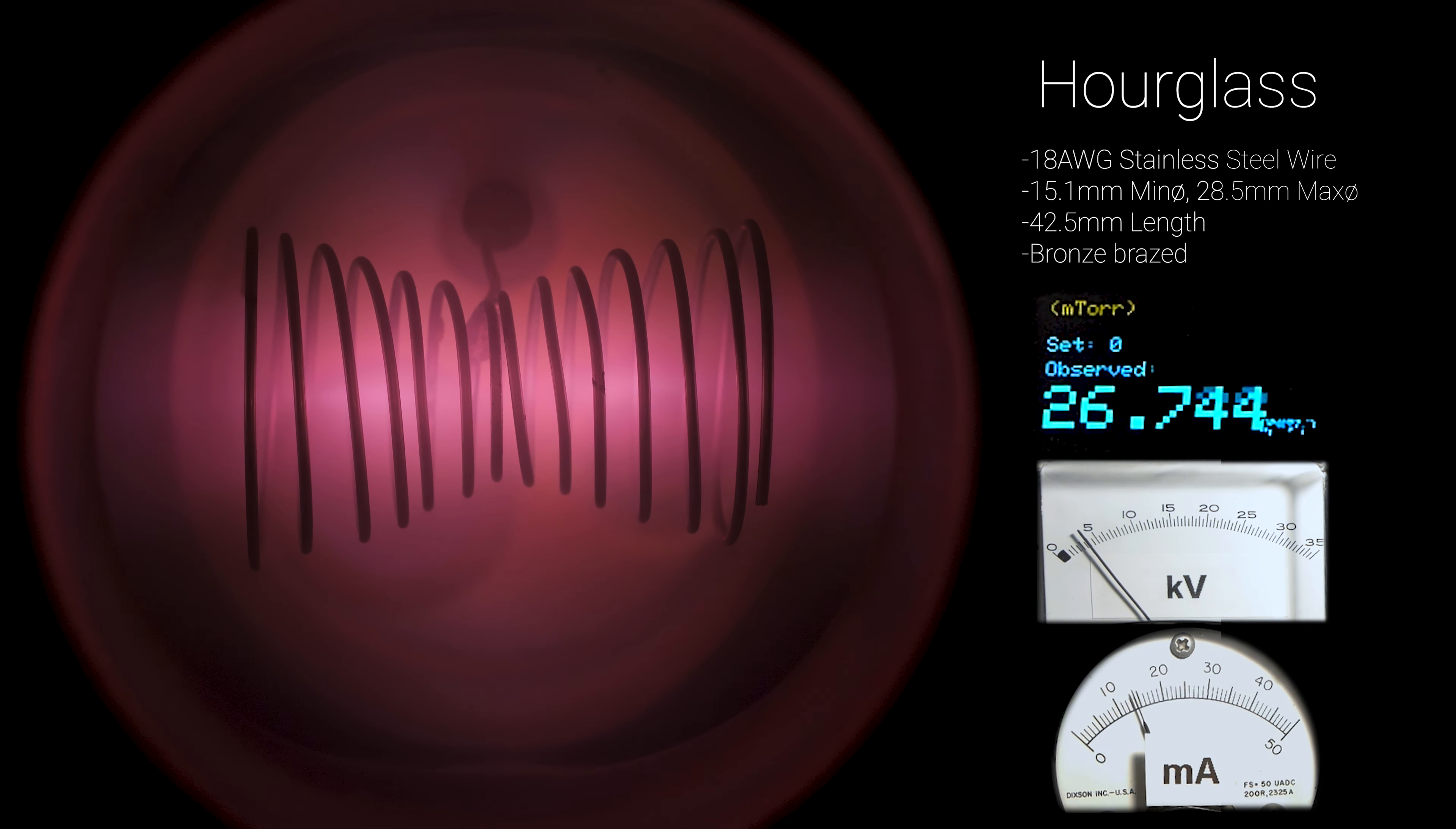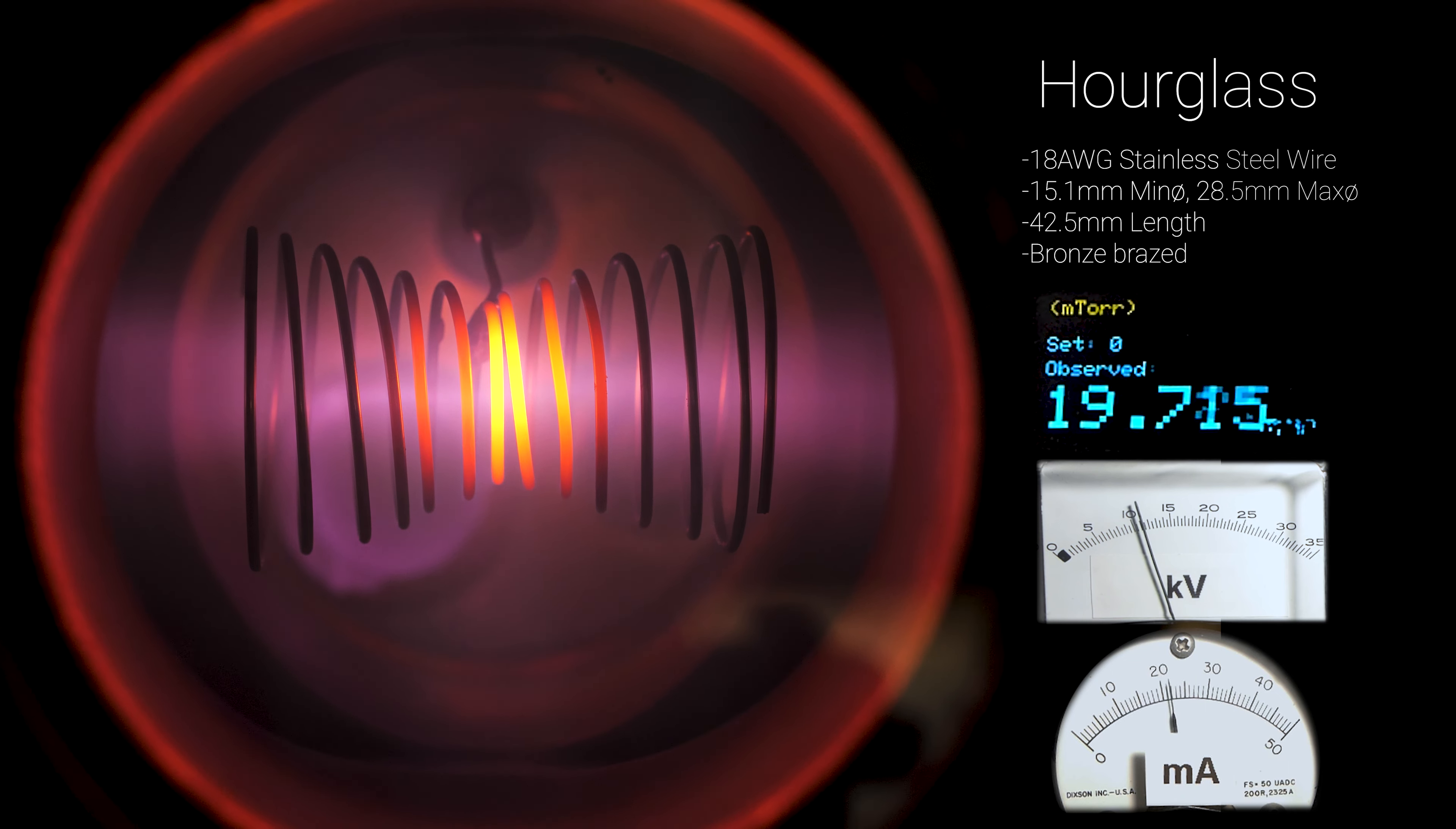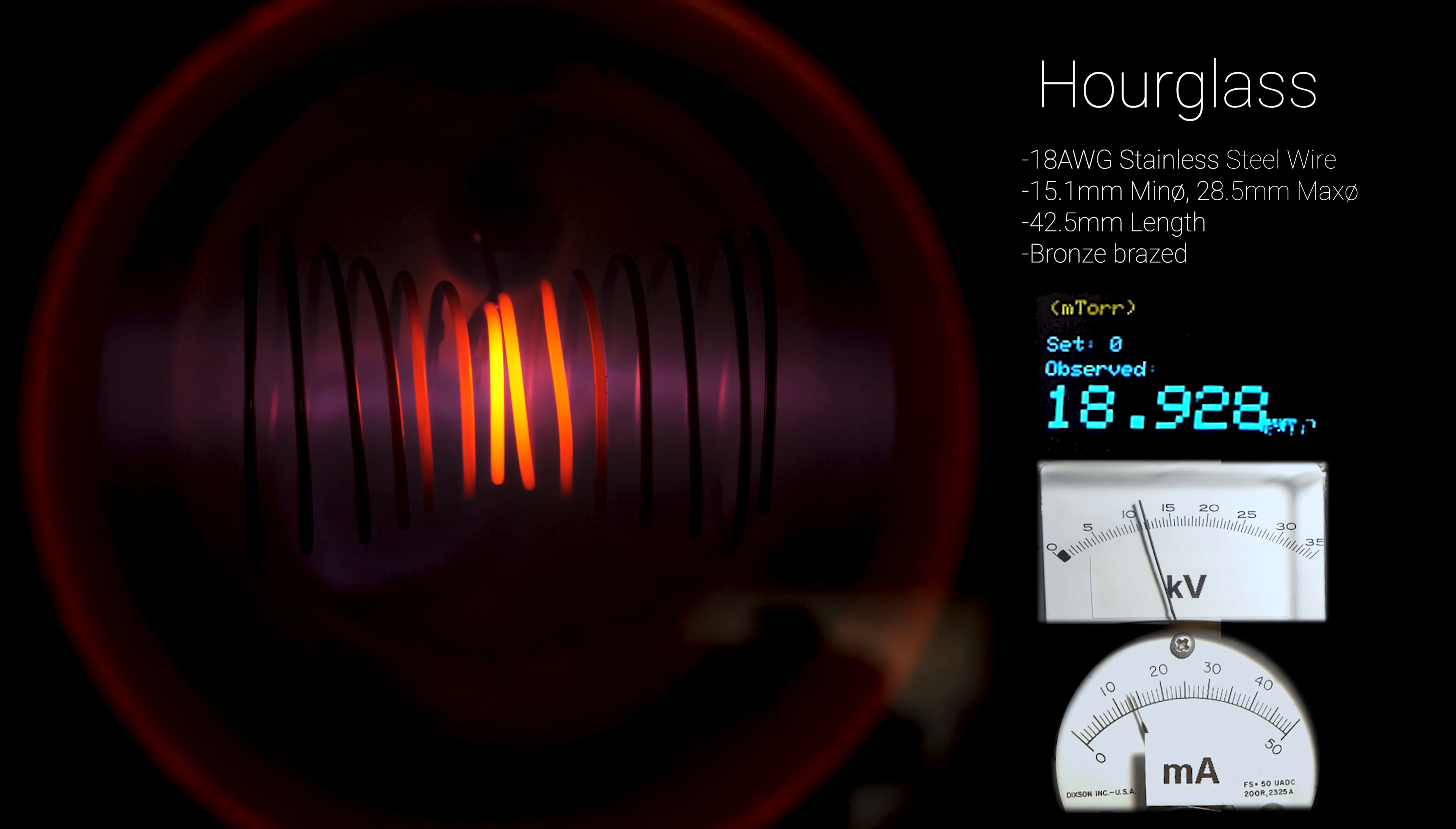Here you can see it almost wants to form two poisers on either side of the constricted center. And reaching a lower pressure of 18.9 millitorr, I have found a peak voltage of about 11.75 kilovolts.